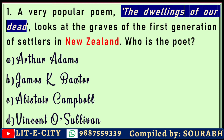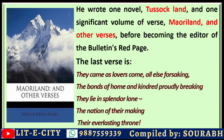All of these are British writers who later settled in New Zealand and became diasporic writers. The correct answer is Arthur Adams. Arthur Adams wrote one novel, Tussock Land, and one significant volume of verse, Maoriland and Other Verses. The famous last lines of the poem read: 'They come as lovers come, all else forsaking, the bonds of home and kindred proudly breaking; they lie in splendor lone, the nation of their making, their everlasting throne.' You can see the typical imperial, colonizing tone in these lines, which is why such poems are examined under post-colonial reading.